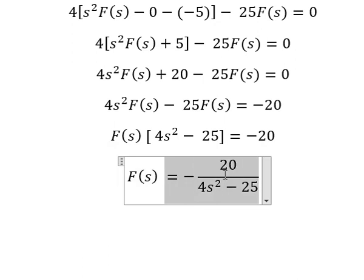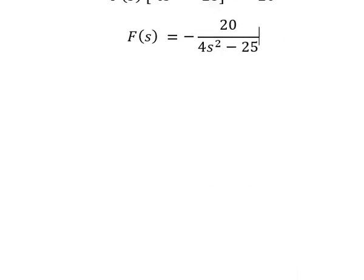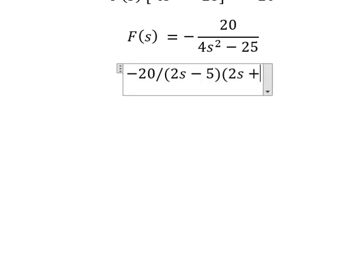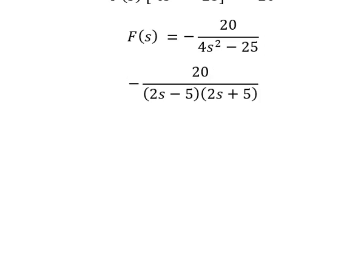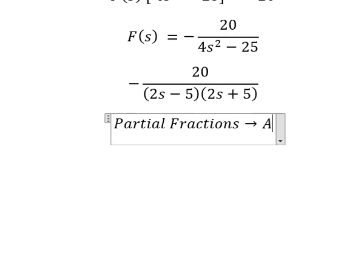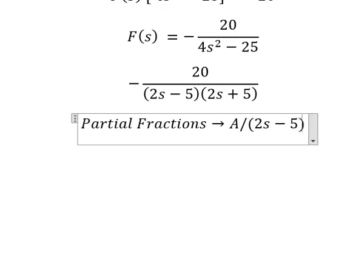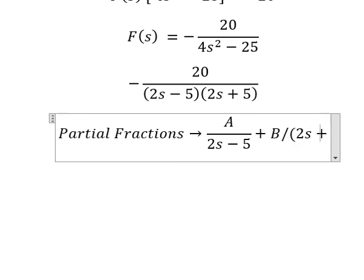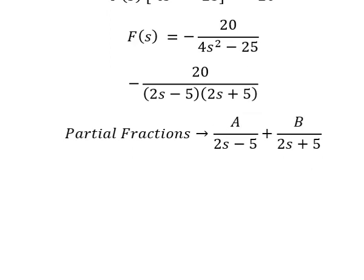Now we can use partial fractions. So we write A over (2s minus 5) and B over (2s plus 5). Now we find a common denominator.